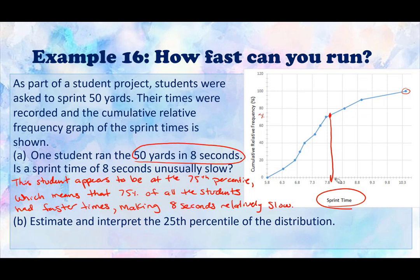Okay. So part B is talking about estimating and interpreting the 25th percentile of this distribution. So instead of going down here from sprint time and trying to find the percentage, we're actually going the opposite way this time. So here is 20, which makes this 25. I'm going to try to draw a line as straight as I possibly can across. And it looks like it's about 6.8 seconds. So what does that mean?